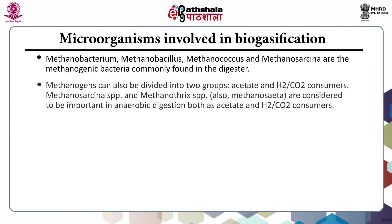In general, methanogens are divided into two groups: acetate consumers and hydrogen/carbon dioxide consumers. Methanosarcina species and Methanothrix species are considered important in anaerobic digestion, functioning both as acetate and hydrogen/carbon dioxide consumers.